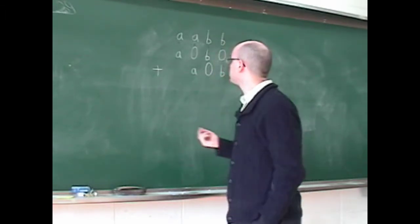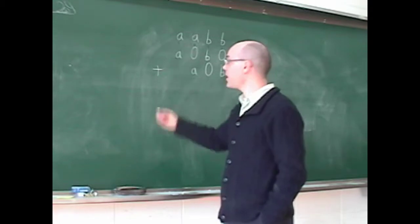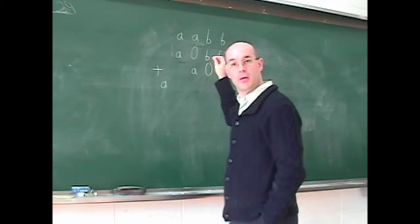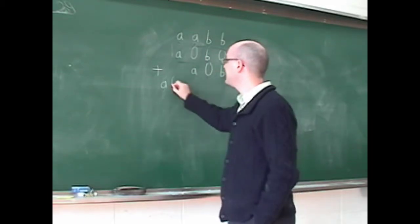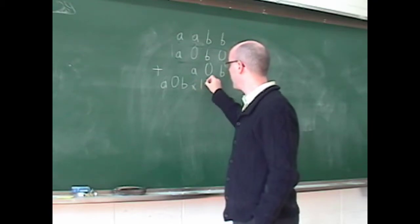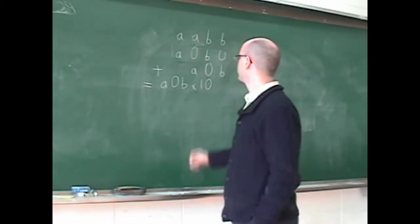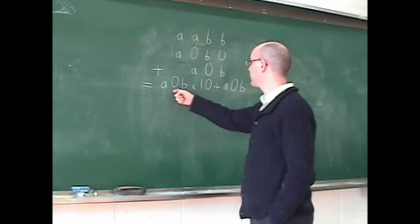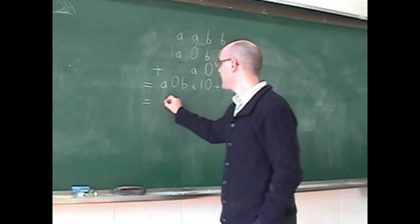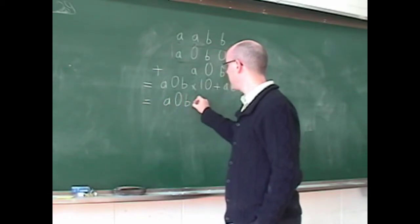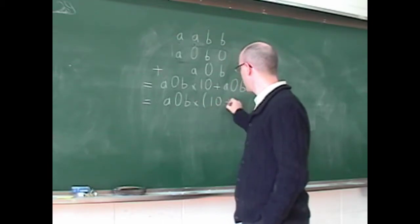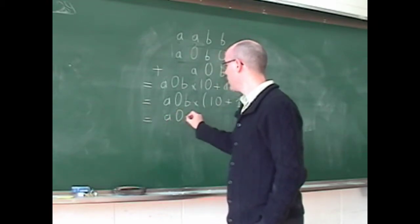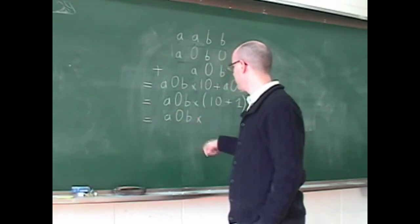The second thing I'm going to do is write this equation, because this is that number multiplied by 10. So it's A0B multiplied by 10 plus A0B. So we have a common factor: A0B multiplied by 10 plus 1, in other words A0B multiplied by 11.